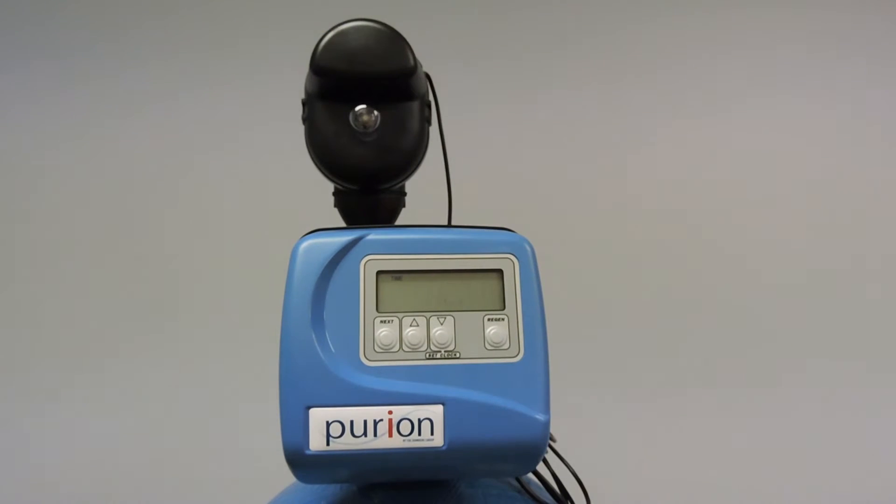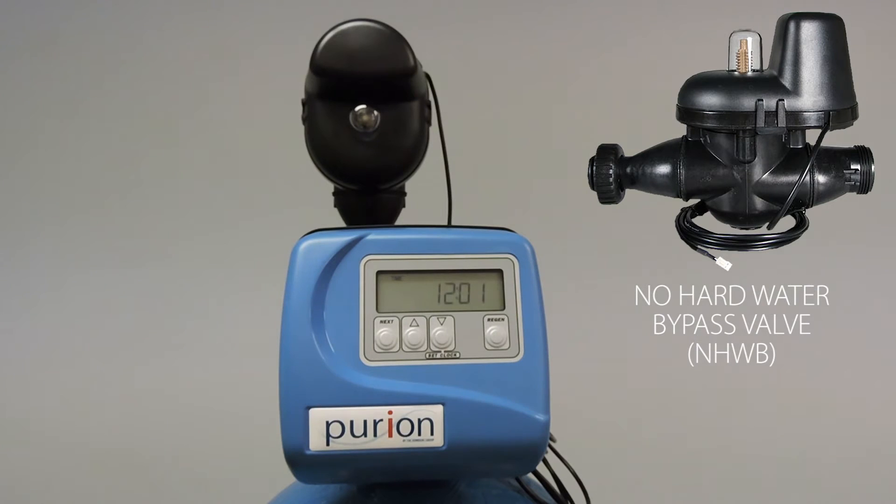We've just installed the valve onto a 12 inch tank. For today we're going to program it up as a 12 inch water softener with a no hard water bypass. To do the programming, the no hard water bypass must be plugged onto the circuit board before we start.